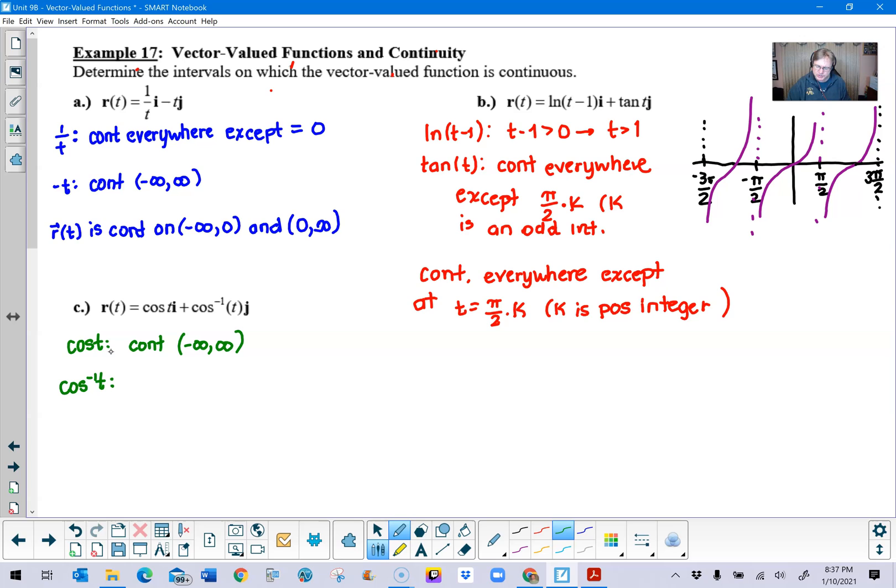Basically, you know that the range of cosine is negative one to one.